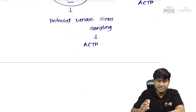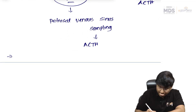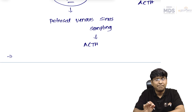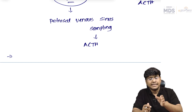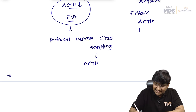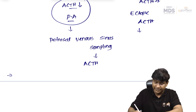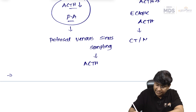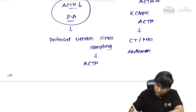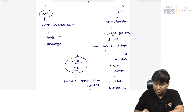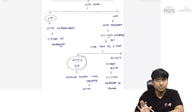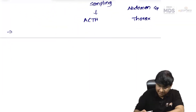If ectopic ACTH is suspected — from small cell carcinoma, pheochromocytoma, pancreatic or bronchial carcinoid, or medullary carcinoma of thyroid — you need to perform CT or MRI of the abdomen as well as the thorax.